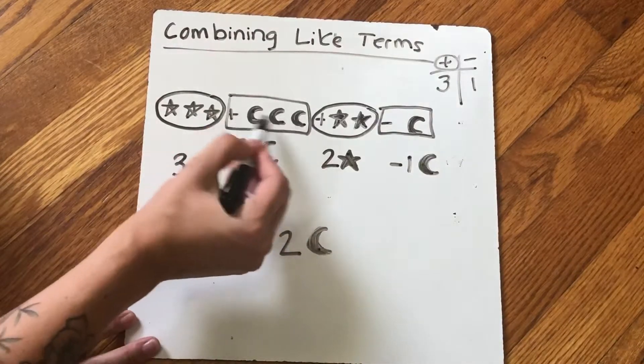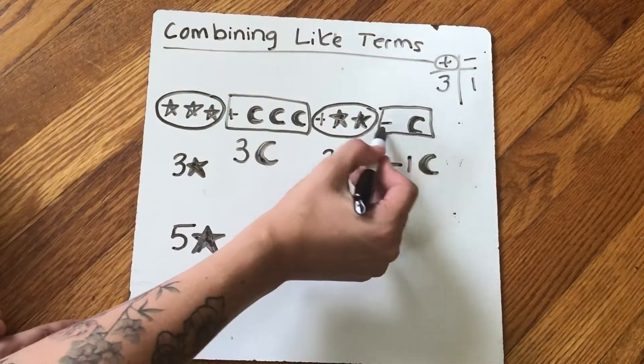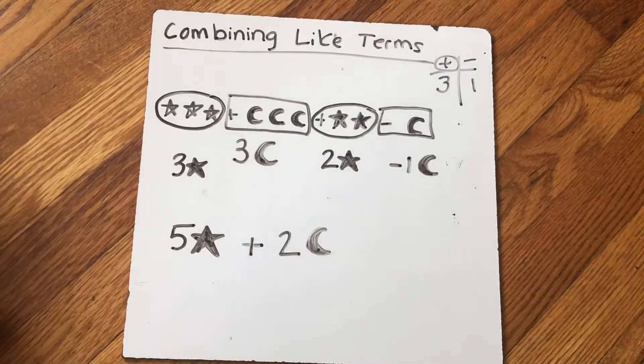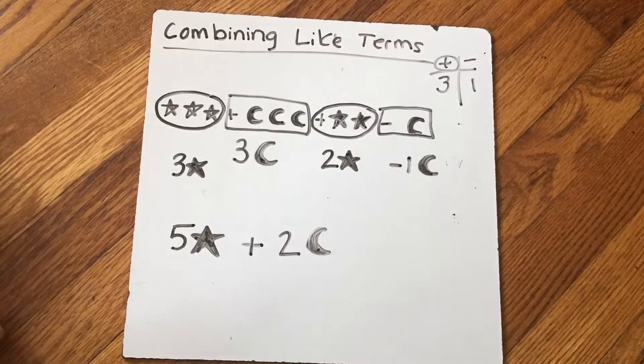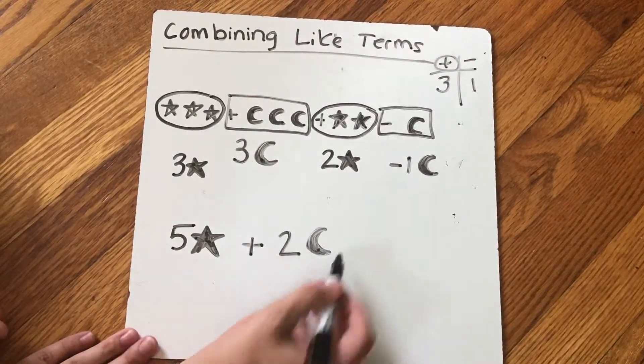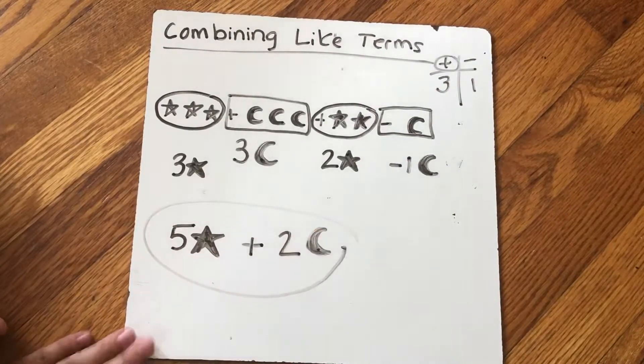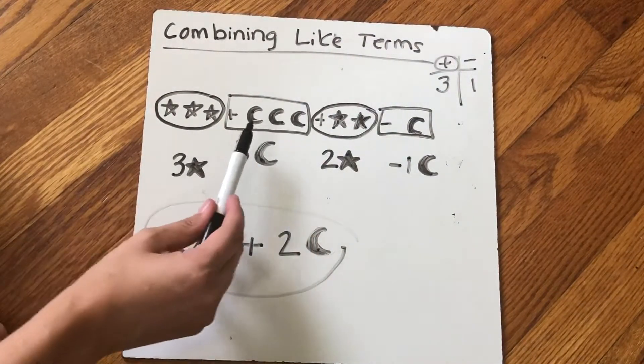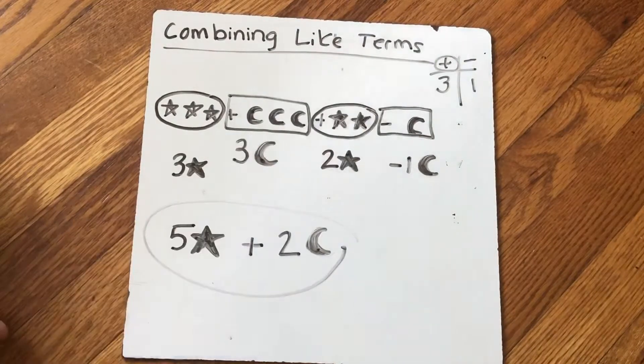If you think about it, if I had three moons over here minus that one moon, then that makes two moons. So now my simplified expression is five stars plus two moons. And that's exactly what I have up here. I have five stars being added, and then I'm adding two moons because I had three here and I subtracted one.